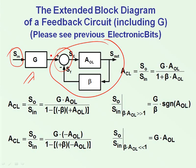It was shown in previous ElectronicBits that we can divide the response of this system into two areas. One area is when the loop gain beta A_OL is much larger than one. And in this case, when beta A_OL is much larger than one, then one can be neglected. A_OL is divided out and we get a response of G over beta.